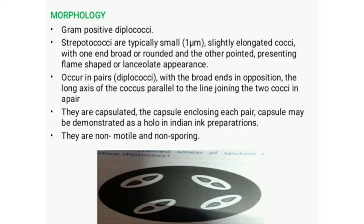Morphologically, Streptococcus pneumoniae are typically small, about one micrometer in diameter, slightly elongated cocci with one end broad or rounded and the other end pointed, giving a flame-shaped or lanceolate appearance. They occur in pairs, hence known as diplococci, with the broad ends in opposition. They are capsulated, non-motile, and non-sporing.